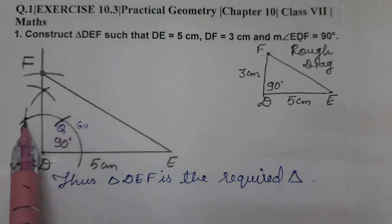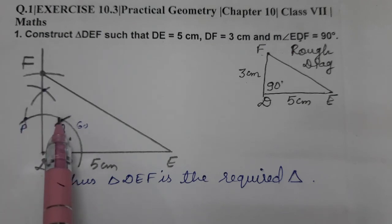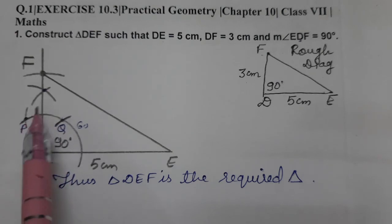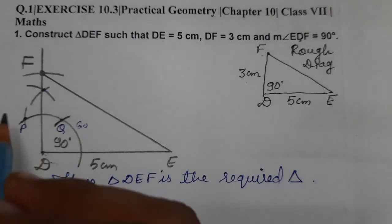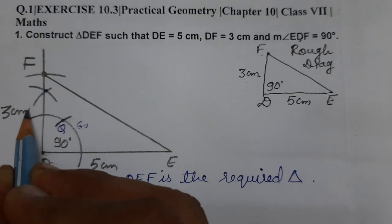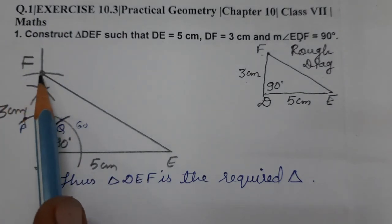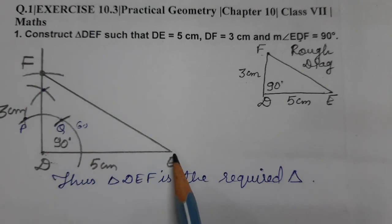And then bisect 60 and 120 to get 90 degrees. Now with D as center and arc radius 3 centimeters, cut the arc so that it will intersect this 90-degree angle at F. Now join F to E. Thus triangle DEF is the required triangle.